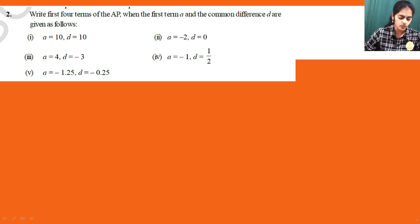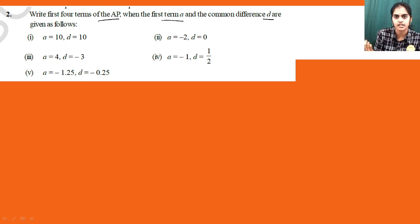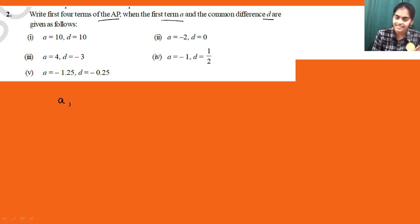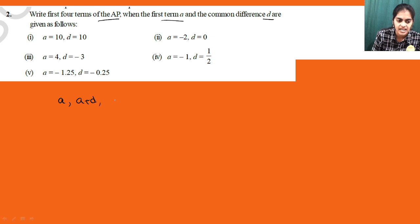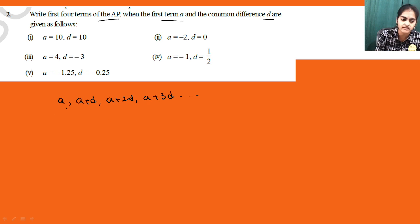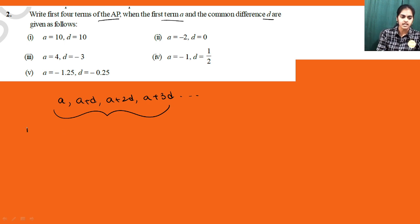Question number two: write the first four terms of an AP when the first term is 'a' and common difference is 'd'. In an AP, the general form is a, a+d, a+2d, a+3d, and so on. We want only the first four terms: a, a+d, a+2d, a+3d.